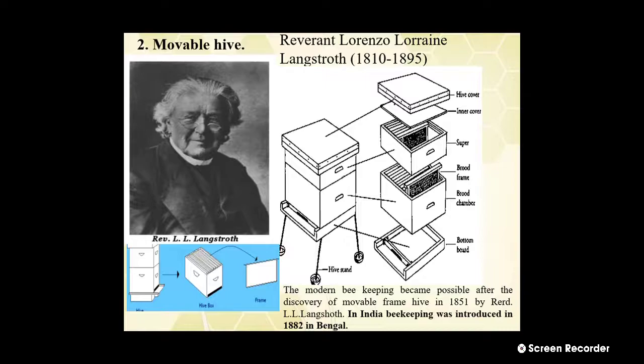The second type is the moveable frame hive. The scientist Reverend Lorenzo Lorraine Langstroth (L.L. Langstroth) discovered the moveable frame hive. Modern bee keeping became possible after the discovery of the moveable frame hive in 1851 by Reverend L.L. Langstroth. In India, bee keeping was introduced in 1882 in Bengal. The moveable frame hive structure was discovered by L.L. Langstroth in 1851.